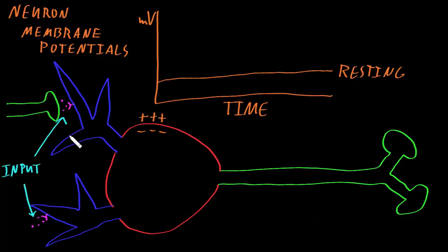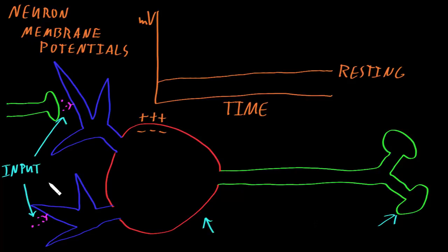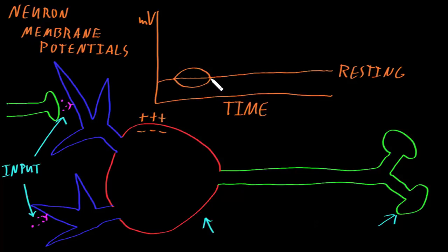Input information usually comes into neurons through the dendrites, but it can also come into parts of the soma and even parts of the axon. Neurons are set up so that most input information comes in through the dendrites. Input information coming in through the dendrites or the soma is going to be transmitted to the axon as a change in the membrane potential away from the resting potential. These changes could be excitatory or inhibitory, depending on what the stimulus is.